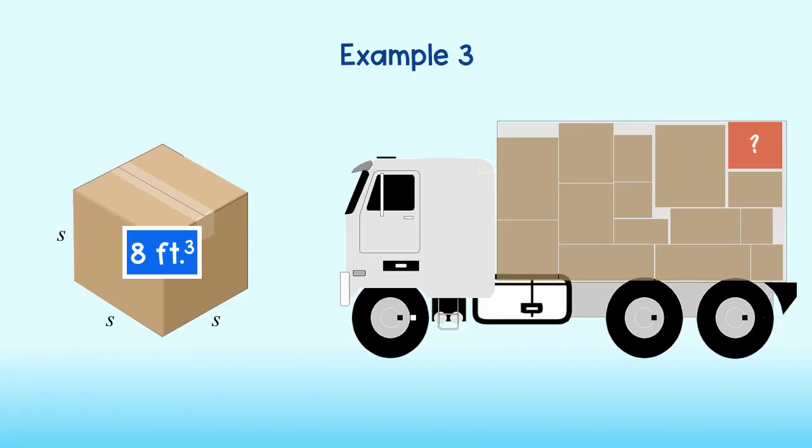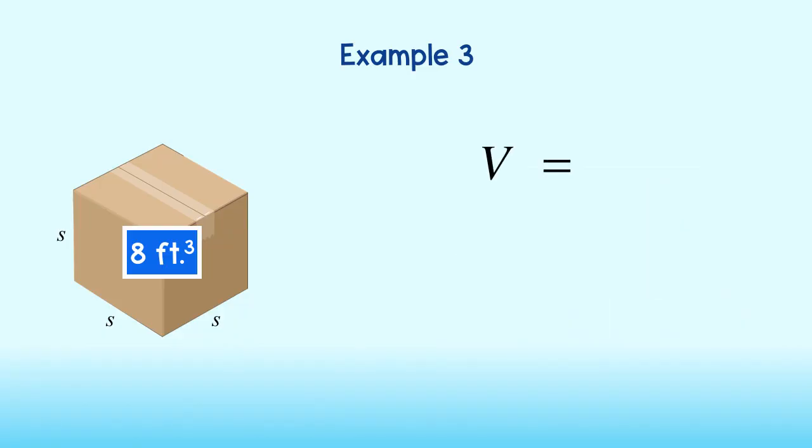Now, let's see if we can find the height of this box. Remember, the volume of a cube is equal to the length of its sides cubed. In this problem, the volume is 8 cubic feet. To find the length, we can solve for s by taking the cube root of each side. In doing so, we see that s, or the length of each side of the box, is equal to 2 feet.